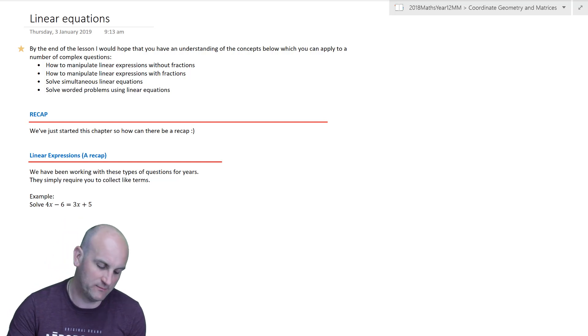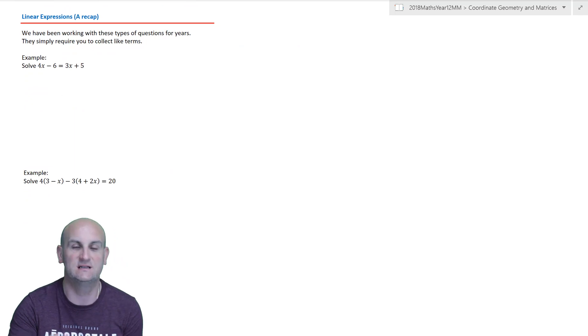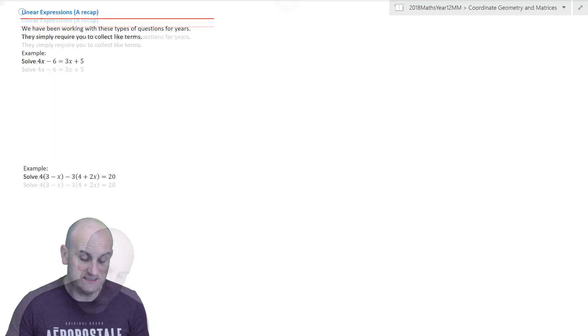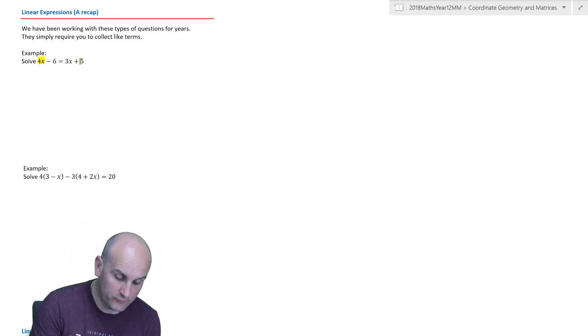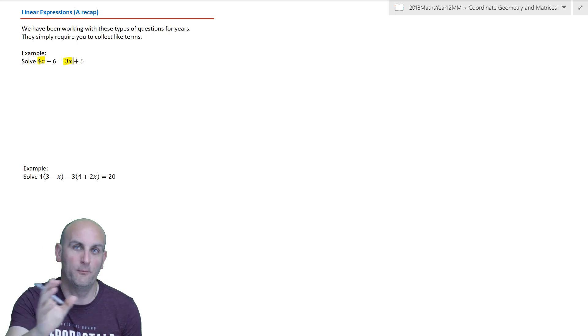I've got here a recap. Let's go back to linear expressions. Some of you guys have been doing this since about year eight, probably earlier. The most basic form of linear expression is the one shown here. In this situation we have two terms with pronumerals, one on the left hand side and one on the right hand side. We want to actually put them all onto the same side to collect like terms and to simplify it to find my value of x.